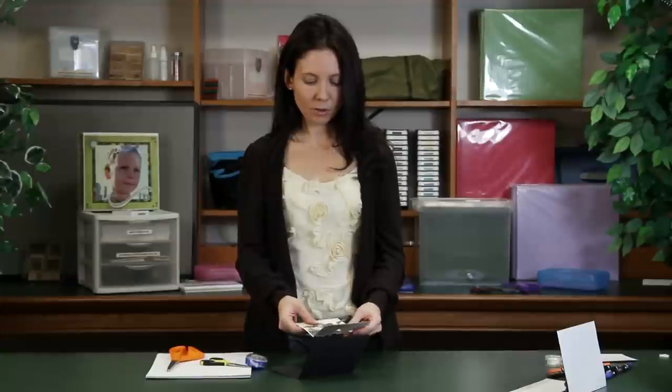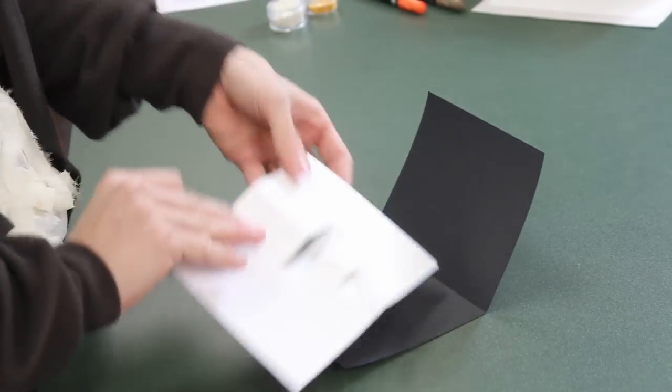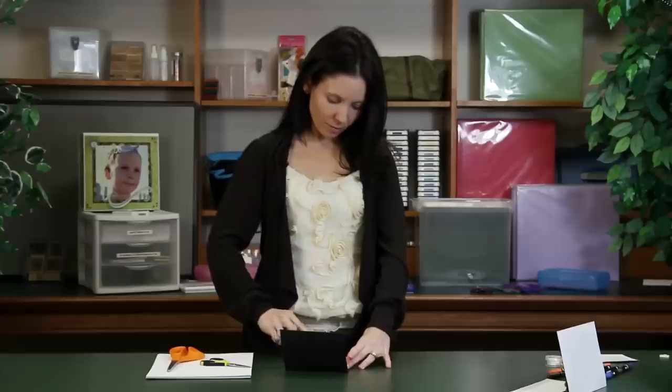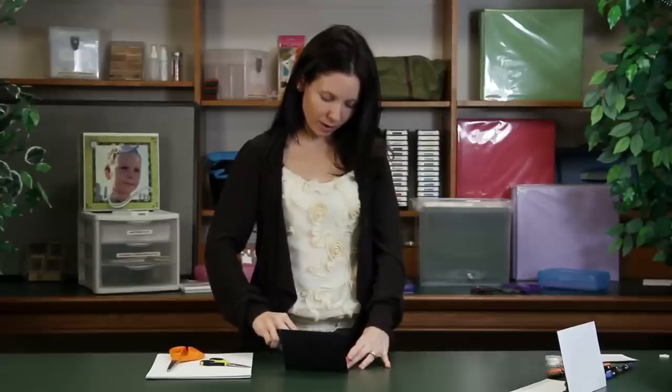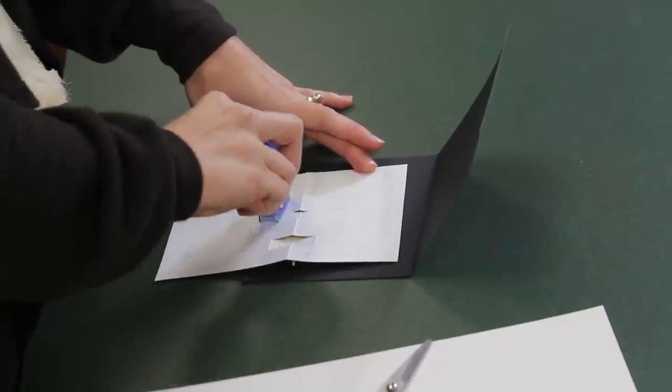Okay, now it's time to adhere it to the main card stock. I've chosen black to really offset it. The last step is to just add adhesive. Make sure you put enough on so that it doesn't fall apart later. This is permanent adhesive that I'm using.